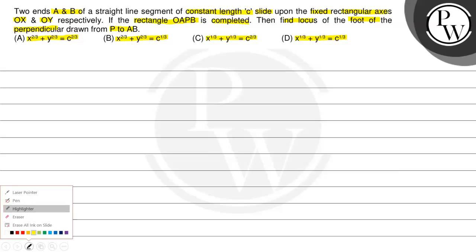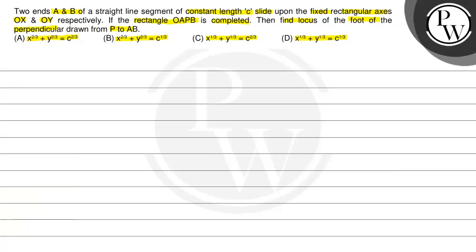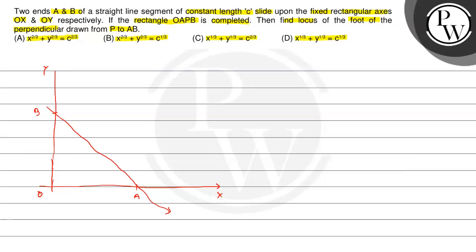First let us understand the structure of the question, what the question is asking. Then we will look at the concept needed. Let's see what strategy we use. We have a rod of constant length. These are our two rectangular coordinate axes OX and OY. One end A is on OX and the other end B is on OY — this is our rod sliding on OX and OY.